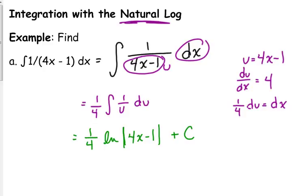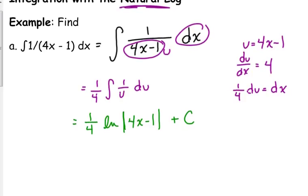And you can always take the derivative to check. 1 fourth times 1 over 4x minus 1 times 4. The 4 and the 1 fourth cancel, and 1 over 4x minus 1. That was our problem.